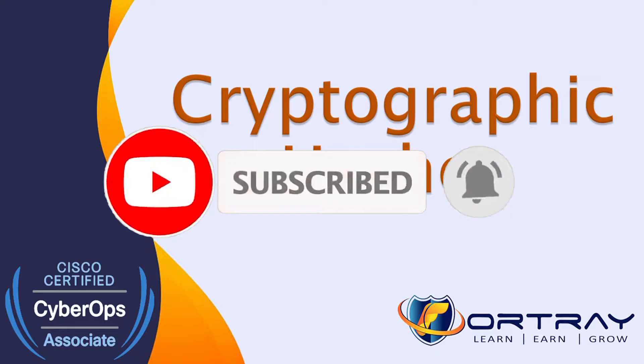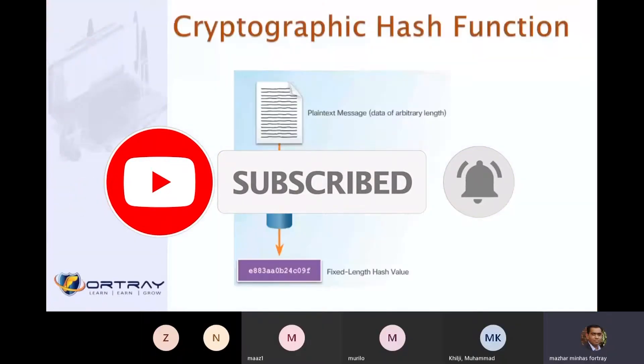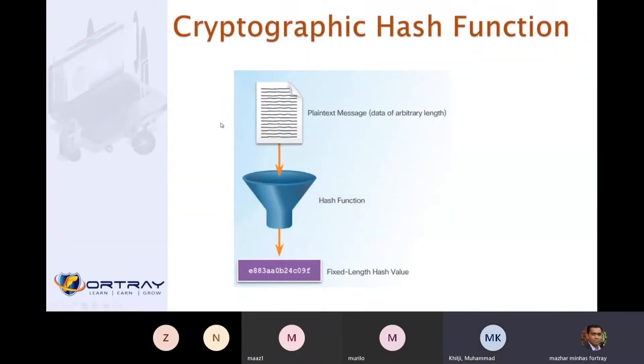Cryptographic hash functions work by taking plain text data of arbitrary length, processing it through a hash function like a mince machine, and generating a fixed length hash value.